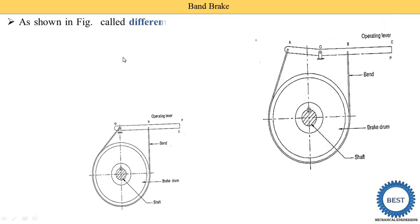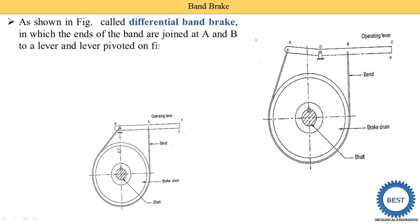The second type is the differential band brake. Here you can see the simple band brake versus the differential band brake. It is named differential because in the simple type, the fulcrum point O is attached with one end of the band.